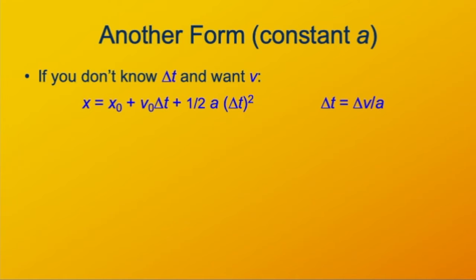The kinematic equations we'll want to use for this derivation are the one for position as a function of time and the definition of acceleration rearranged to solve for the time. Then substitute Δv over a for Δt where it appears in the first equation. We've just plugged it in.